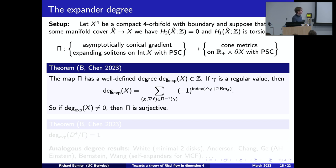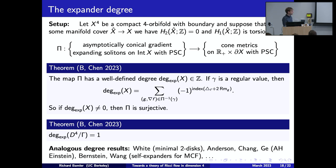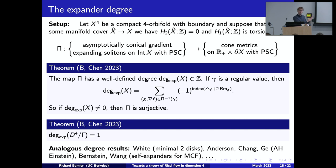We show that for X = D⁴/Γ the expander degree equals one, which gives surjectivity of this map. Analogous degree results are not new — Brian White used degree theory for minimal two-disks, Anderson–Chang–Gay for asymptotically hyperbolic Einstein metrics, and Bernstein–Wang for self-expanders for mean curvature flow. They follow a similar idea, but the case of gradient expanding solitons is more complicated with additional issues I will explain.